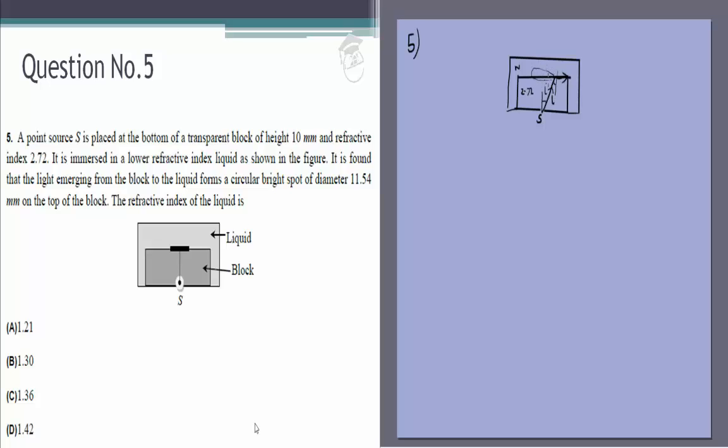What this is telling us is everything within this cone we'll be able to see. So this is a bright spot of diameter 11.54 which just means that this distance is the radius which is 11.54 by 2.